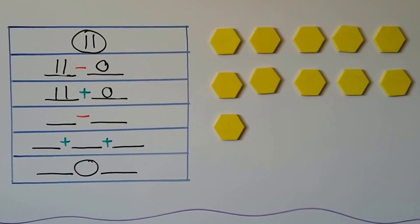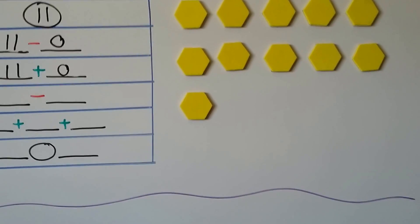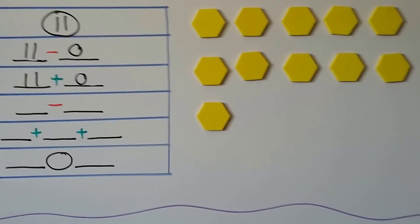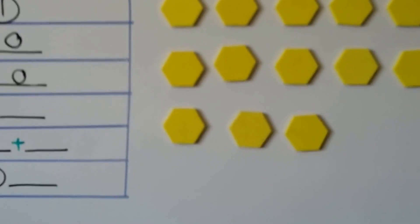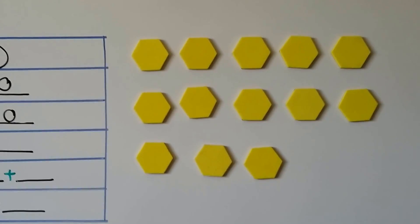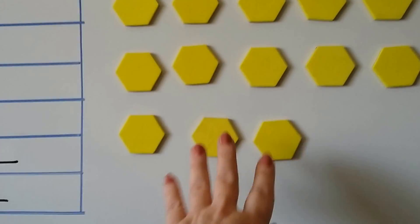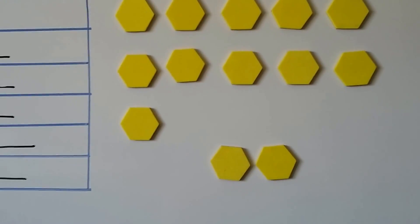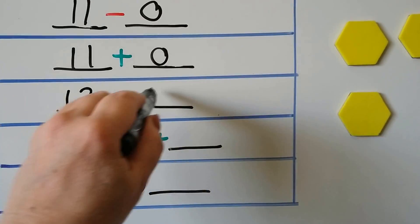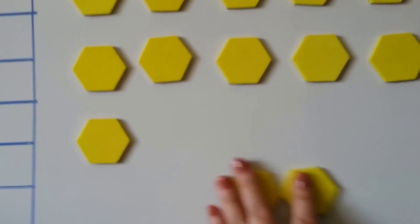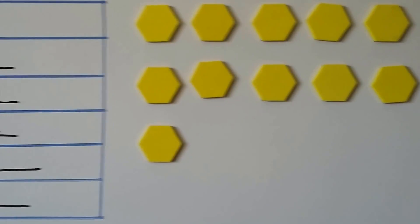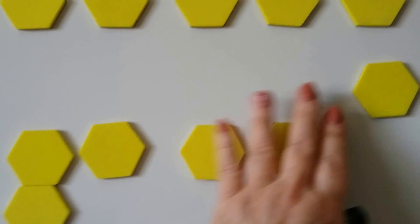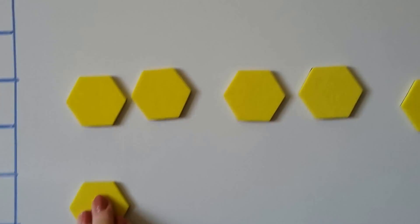For another subtraction sentence, we could add more counters and take some away so that we have 11. If we add counters to get 13, we could say 13 minus 2 makes 11. We can also add three numbers together to make 11 by moving the counters into three groups. An easy one would be 5 plus 5 plus 1 — that gives us 11.